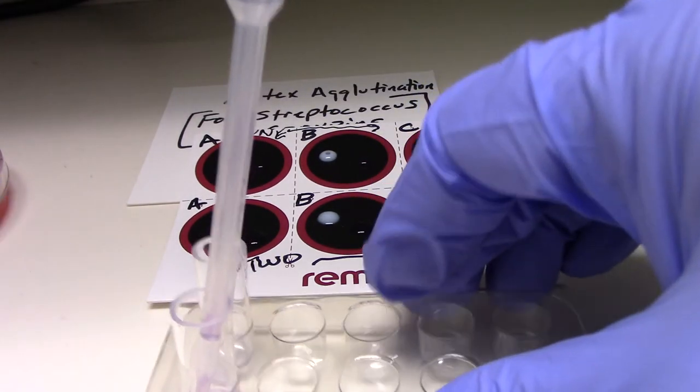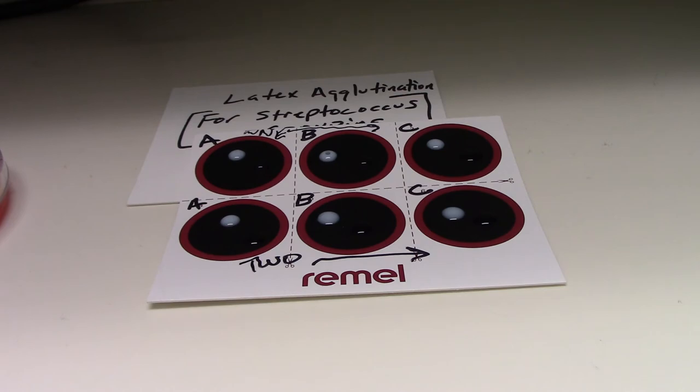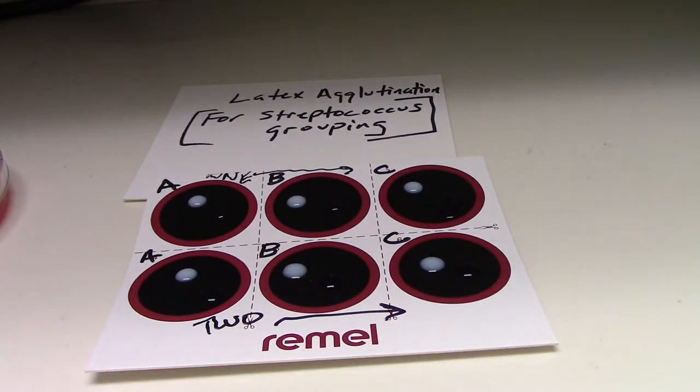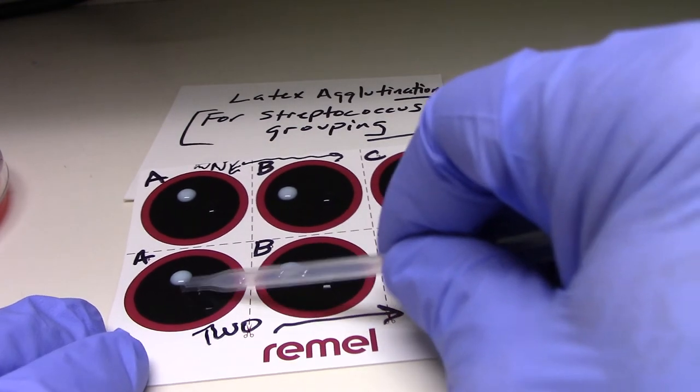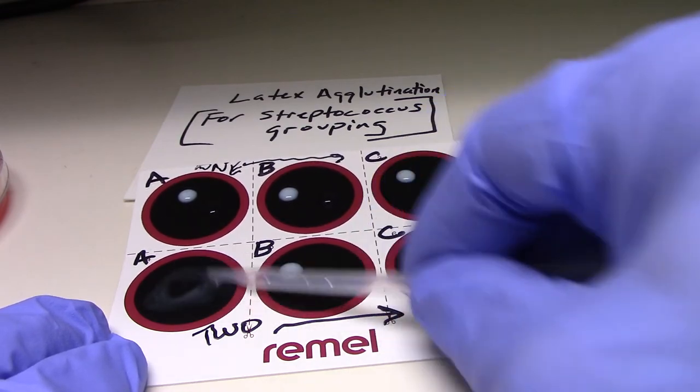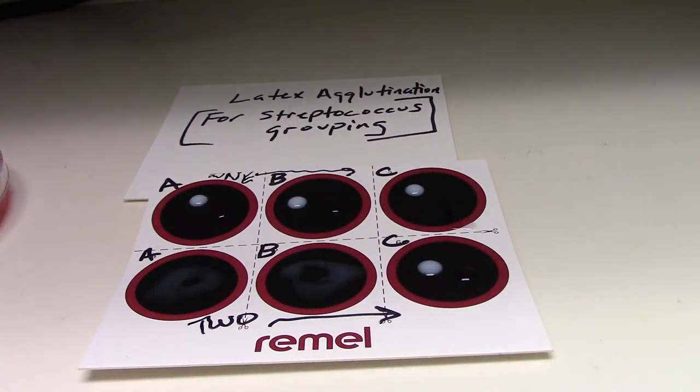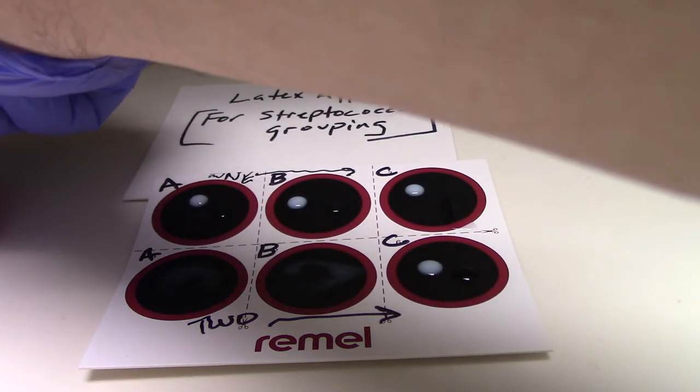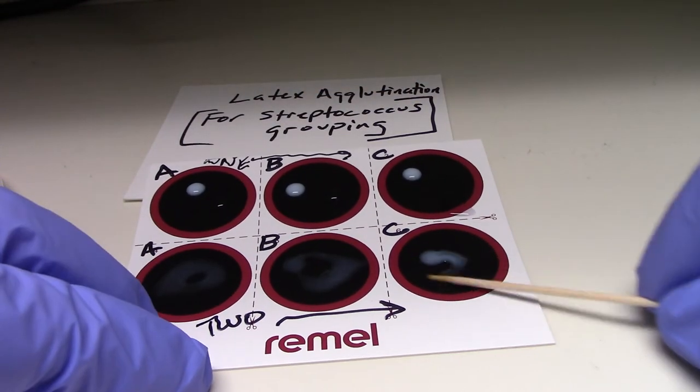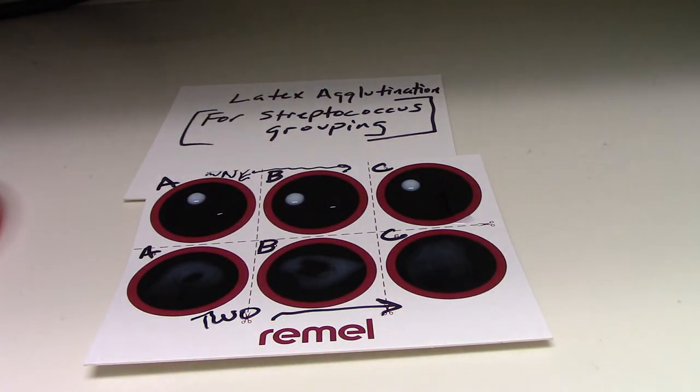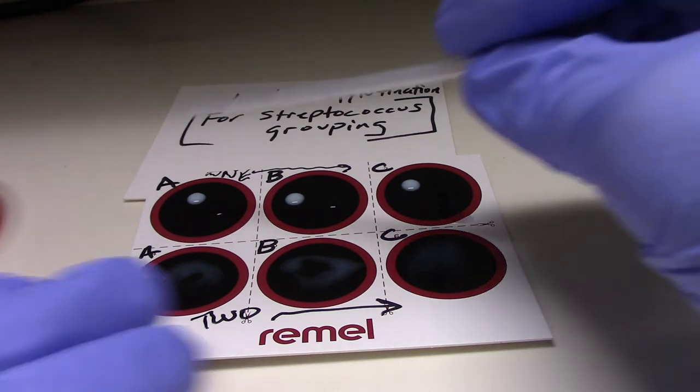So we have two specimens, specimen number 1, specimen number 2. We're going to mix these together and look and see if we can detect agglutination. So we're going to come here and do number 2, and then we're going to come across and do number 1 and mix number 1.